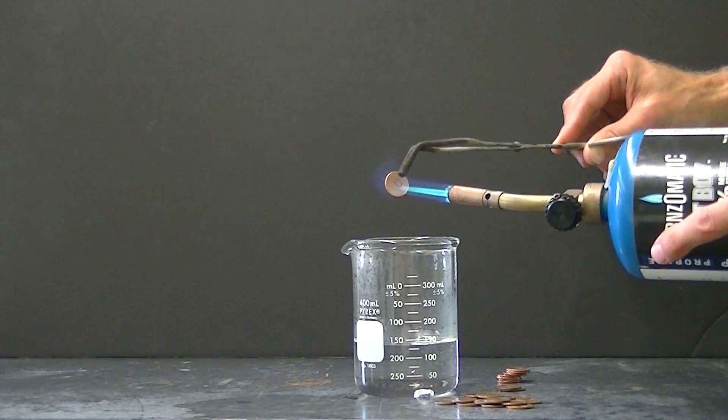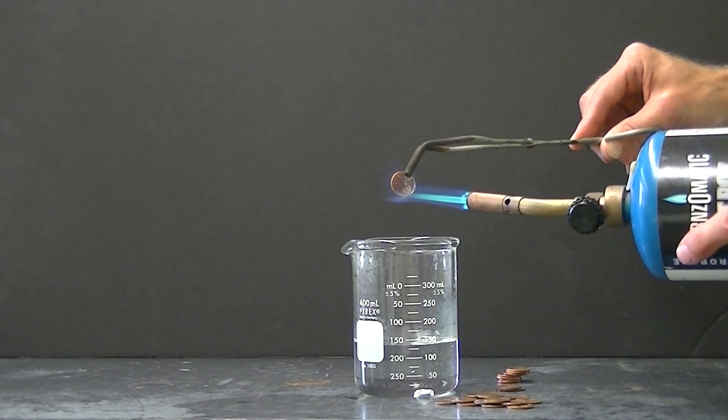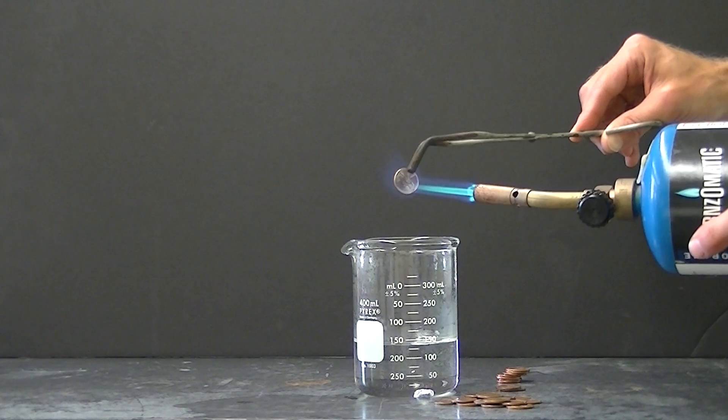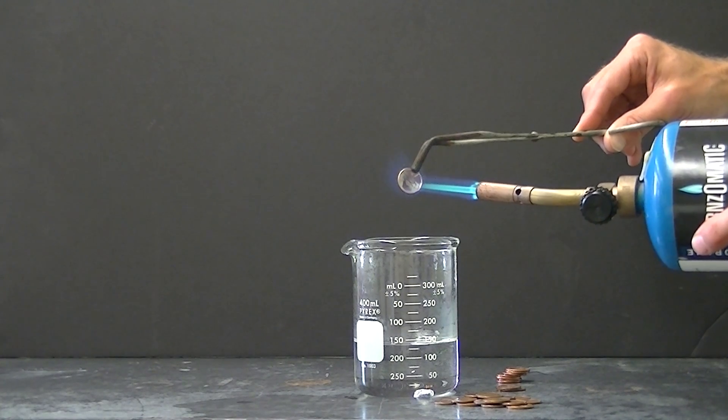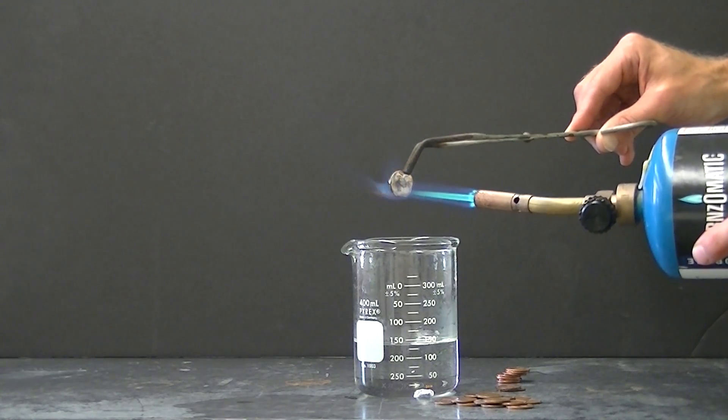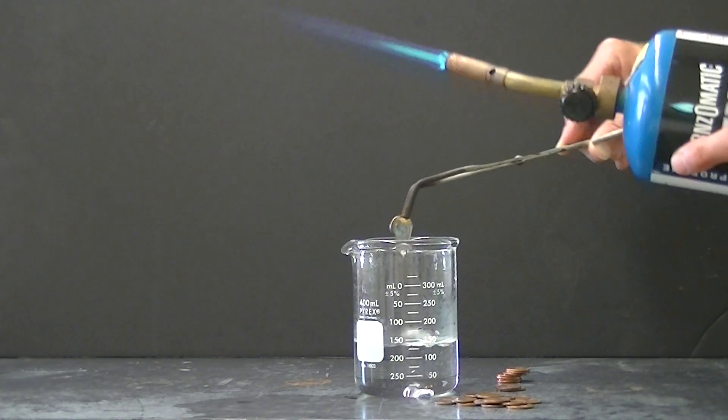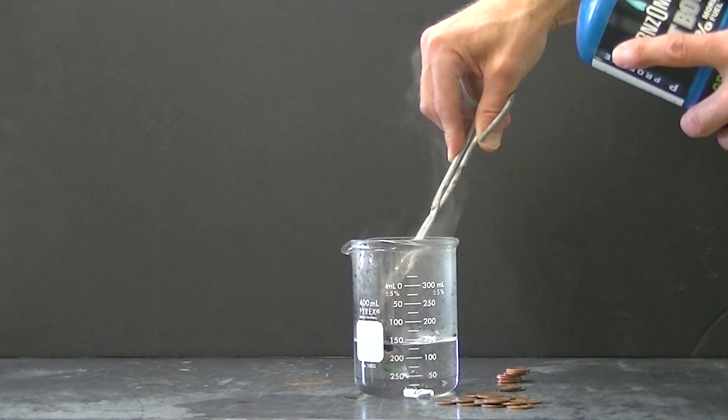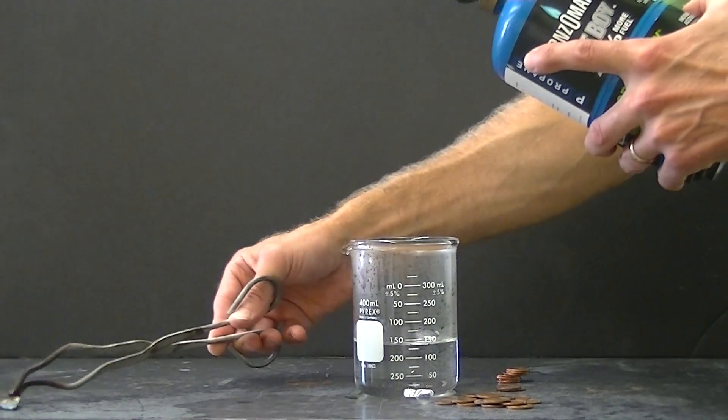So because of that anytime I melt pennies I always have a beaker of water ready beneath so that any molten zinc that drips will get caught in the beaker of water. Of course it also serves to cool the molten zinc and freeze it back to a solid so that you can pick it up.